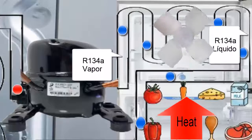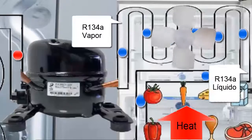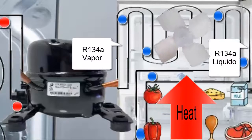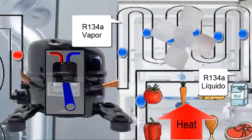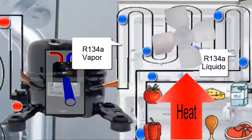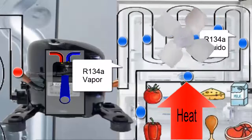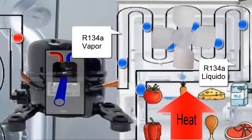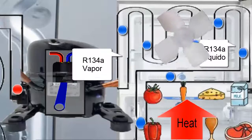As the refrigerant absorbs the heat from the food, they cool down, allowing for preservation. The heat from the food goes to the R134A refrigerant in the evaporator, causing the refrigerant to change from a liquid to a gaseous state.